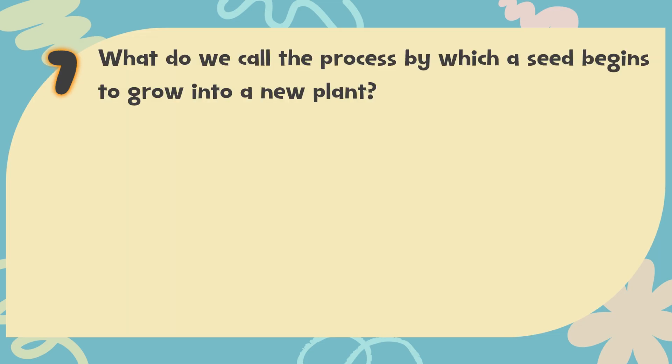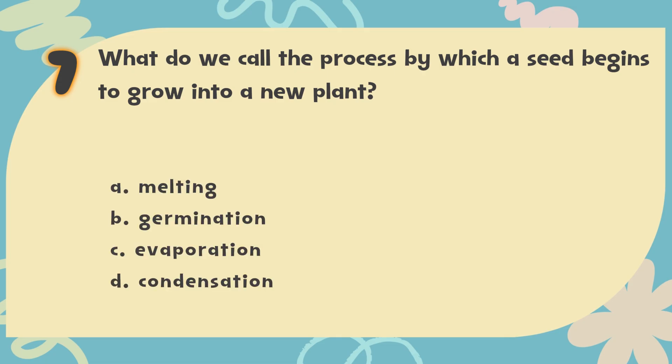Number 7: What do we call the process by which a seed begins to grow into a new plant? The choices are: A. Melting, B. Germination, C. Evaporation, D. Condensation.